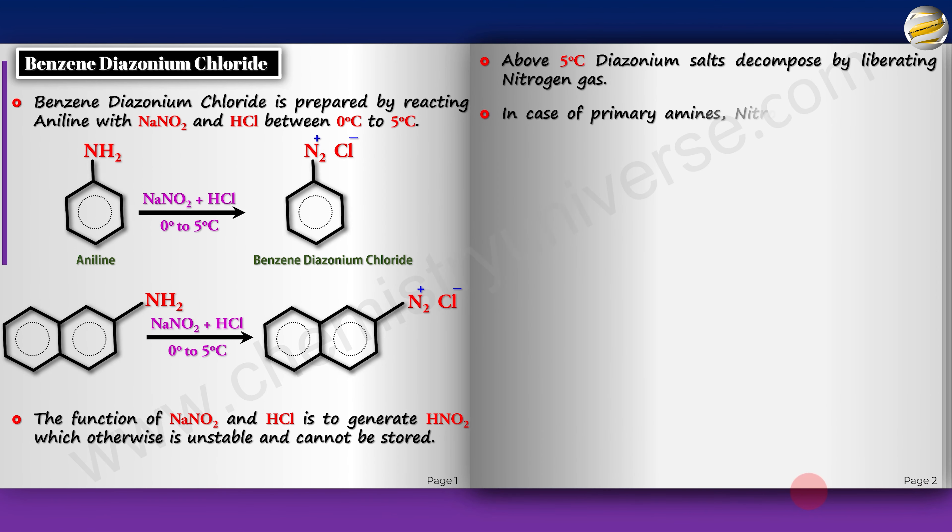In case of primary amines, nitrogen gas is liberated always irrespective of temperature. Let's see the mechanism of the formation of benzene diazonium chloride.